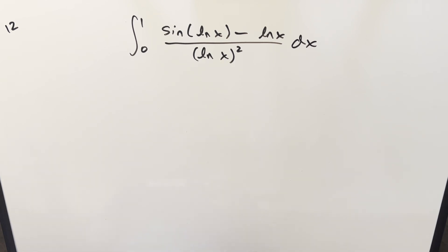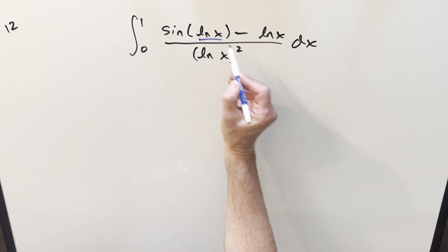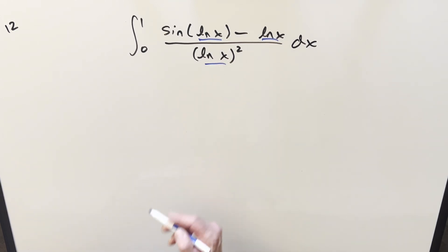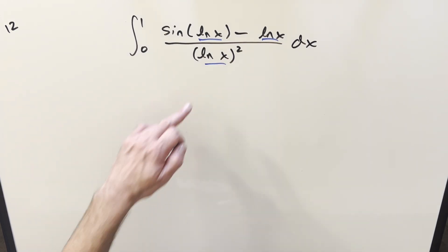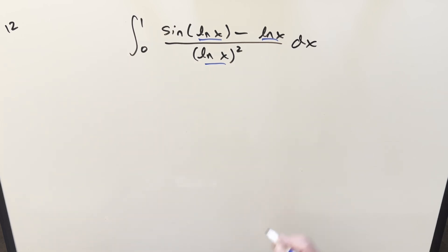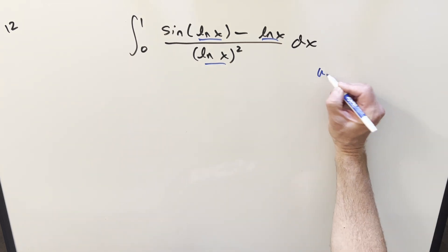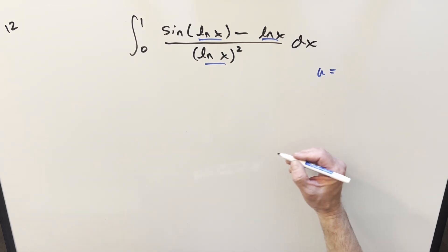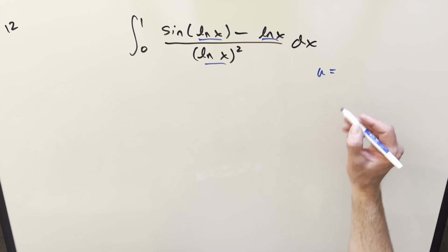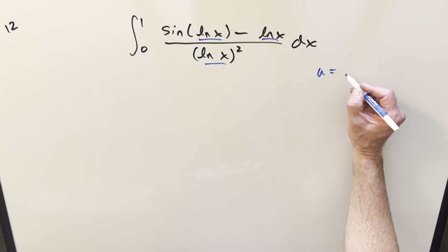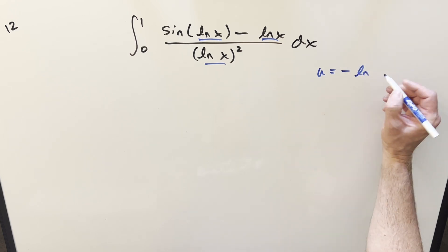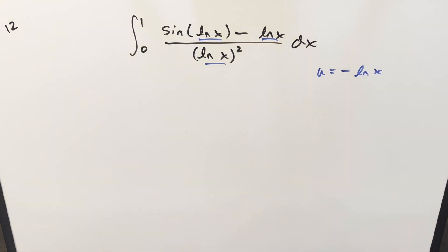The one clear thing we've got going here is natural log x everywhere. So I'm thinking a u-substitution can clean it up, but I think it might actually work better instead of substituting just u for ln x — a lot of times it's nice to do u for minus ln x.